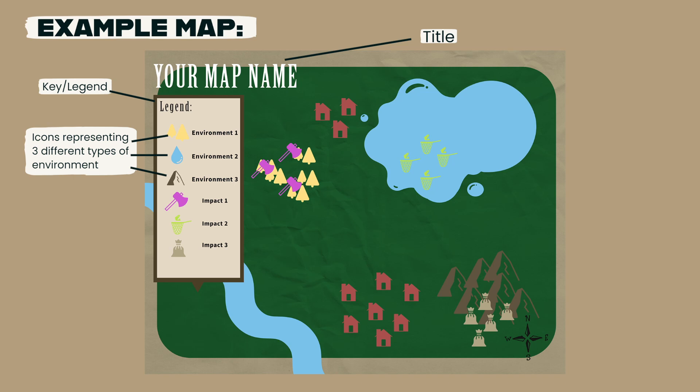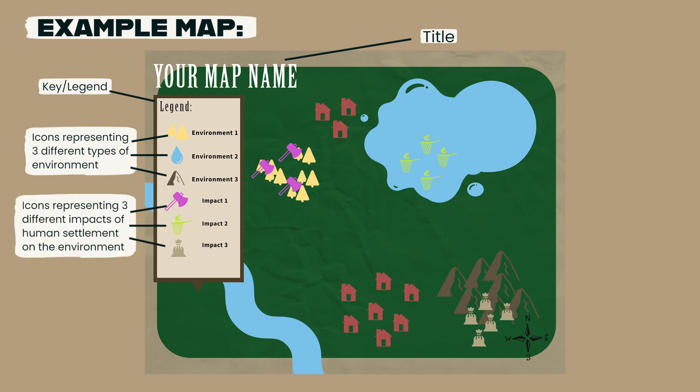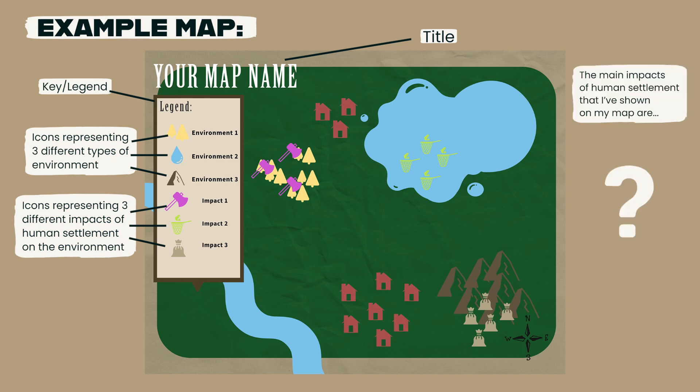Your map should include icons representing at least three different types of environment, and icons representing at least three different impacts of human settlement on the environment, such as deforestation, pollution, urbanization, fragmentation of habitats, etc., as well as a short summary of the main impacts that you chose to represent on your map.